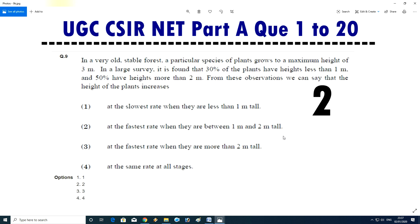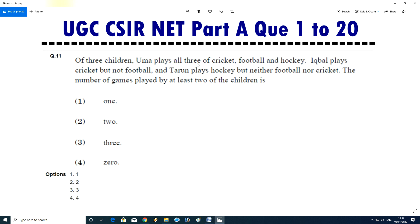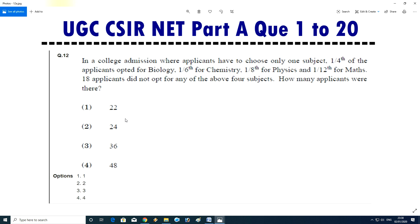Question number 10: of the three children, Uma plays all three of cricket, football, and hockey. Iqbal plays cricket but not football, and Tarun plays hockey but neither football nor cricket. The number of games played by at least two of the children is, answer is second, two games.